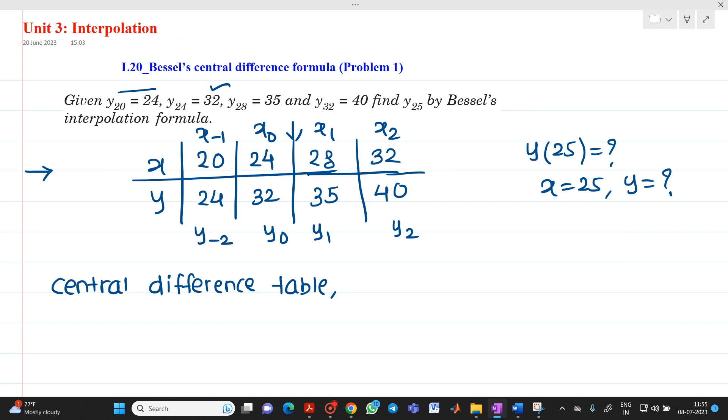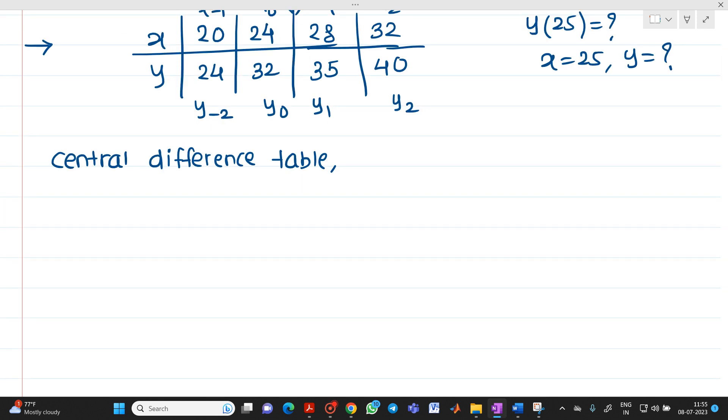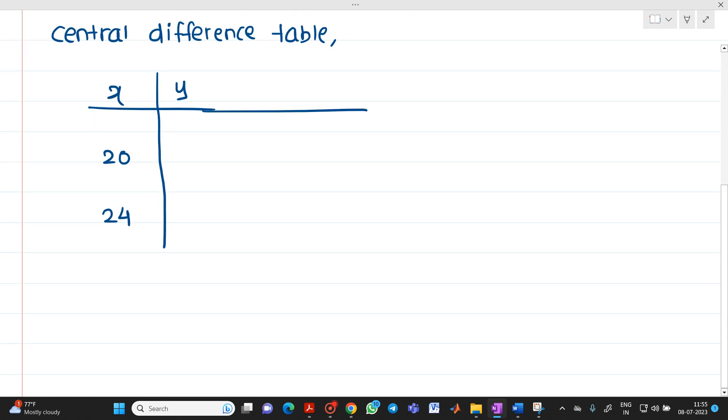We have data or values of x and y. So this will be x, here will be y. So first is 20, second is 24, then after that 28 and 32. And its corresponding values which we have given for y is 24, then 32, then 35 and 40.